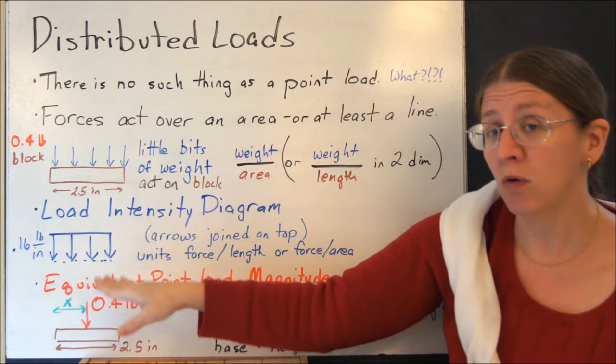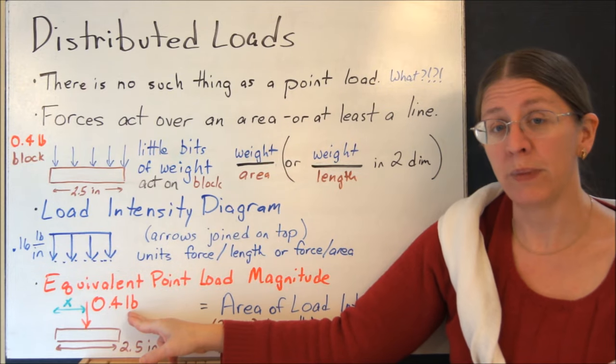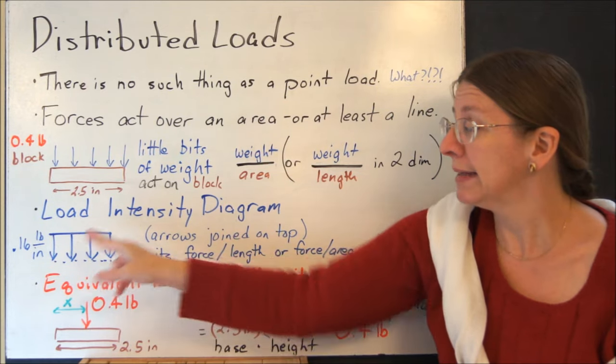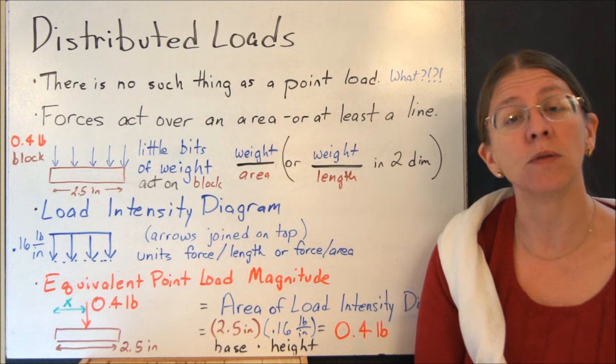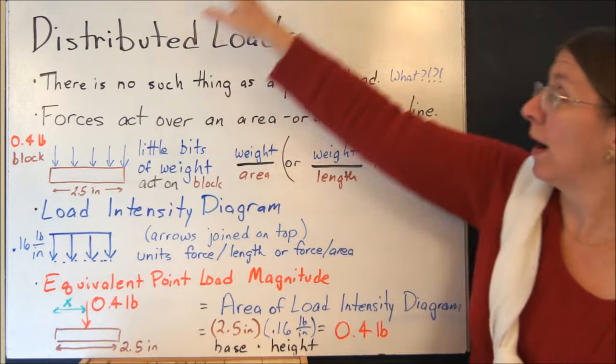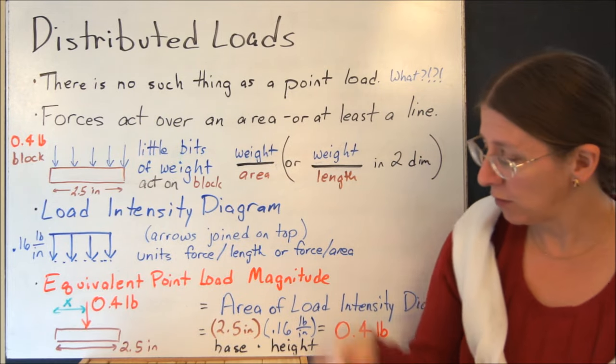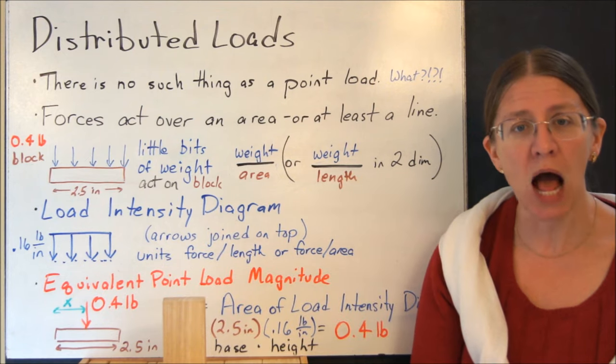So if this is going to be equivalent, then I need to have the sum of the forces being equal to 0.4, and it needs to act at the same spot so that the moments are the same. So what is this x? Where does that force go? Now intuitively you can tell me. If I'm dealing with a quite uniform rectangular block, where's the point force go? It goes in the middle.